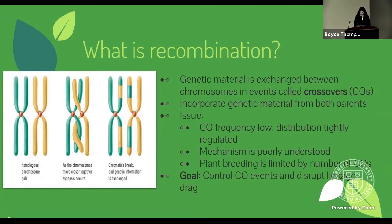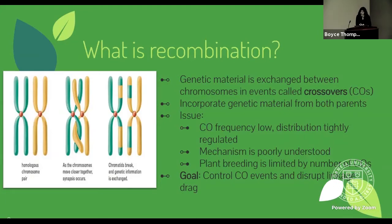The issue with this process is that crossover frequency is relatively low across the chromosome, and its distribution is tightly regulated. The mechanism is also poorly understood. With all these issues, plant breeding is limited by the number of crossover events. Our goal is to be able to control crossover events and disrupt linkage drag, which is a process by which unfavorable groups of genes persist across generations.